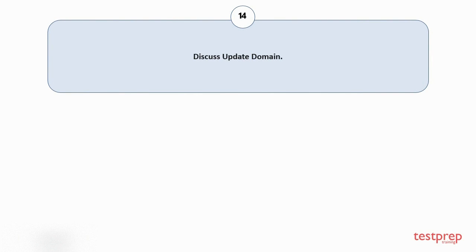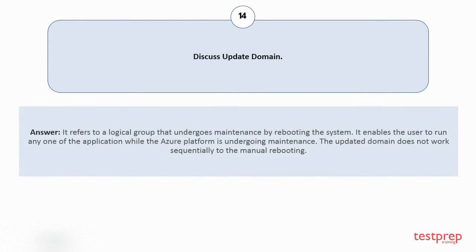Question number 14: Discuss the update domain. An update domain refers to a logical group that undergoes maintenance by rebooting the system. It enables the user to run any one application while the Azure platform is undergoing maintenance. The update domain does not work sequentially to manual rebooting.